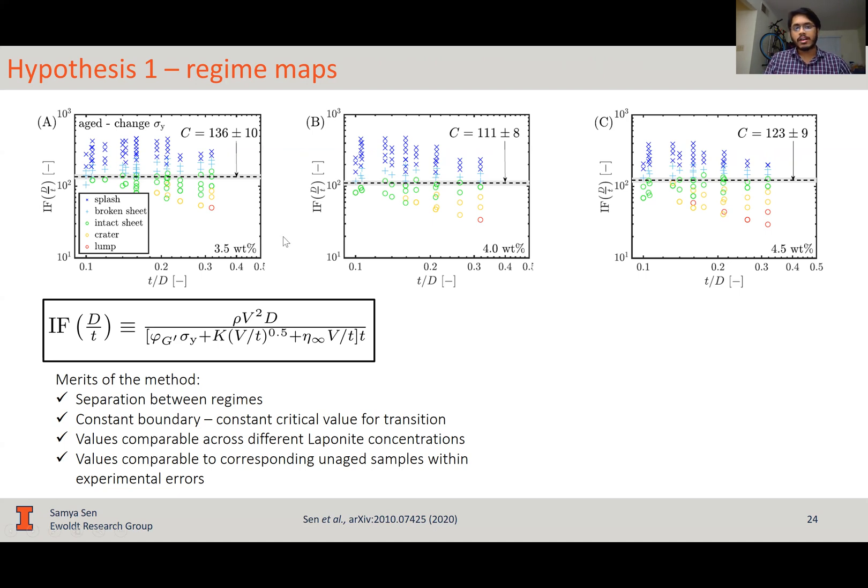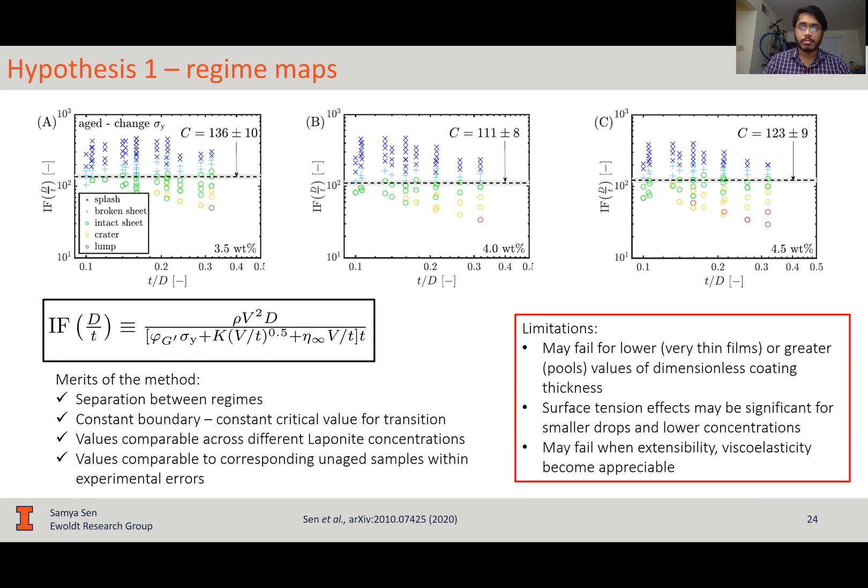But before we get too carried away with ourselves, we have to keep in mind a few caveats, is that this dimensionless group may fail for very lower values or large values of coating thickness, which are called very thin films or pools, because in those cases, you cannot define a dimensionless coating thickness. Surface tension effects may be significant for smaller droplets or lower concentrations, where the yield stress is not the dominant factor and surface tension doesn't appear in this group. This group may also fail when there is appreciable extensibility or viscoelasticity in the fluid, because even those are not included in this dimensionless group.